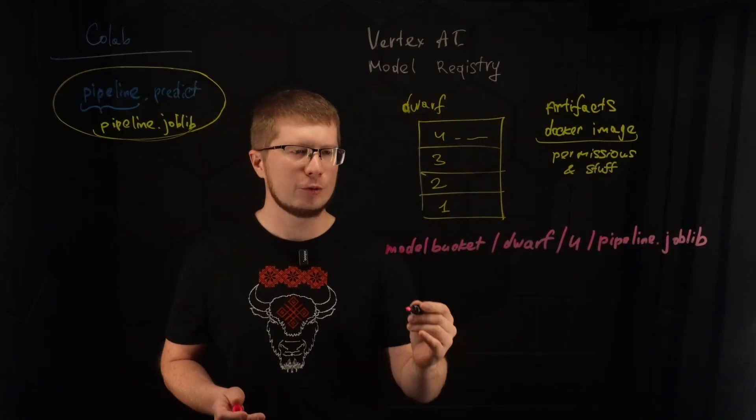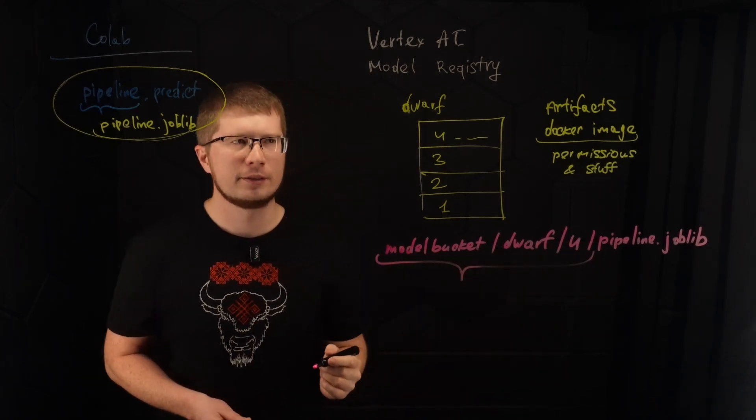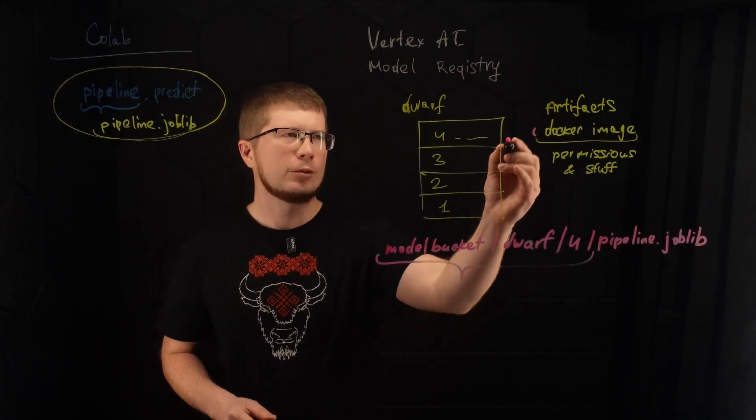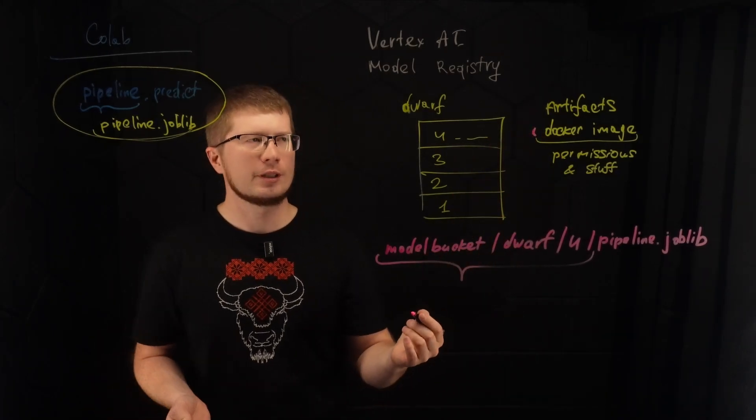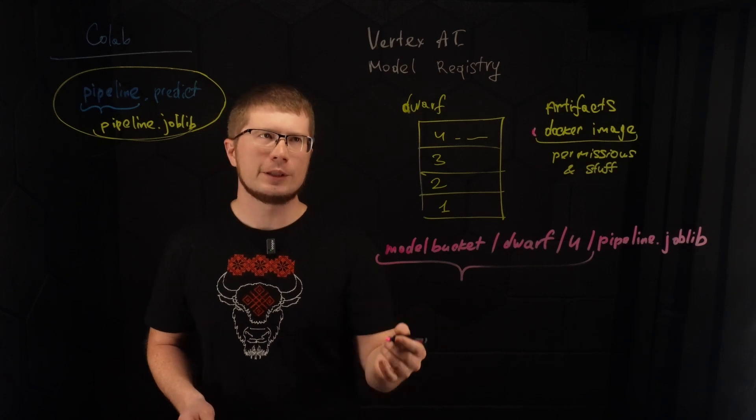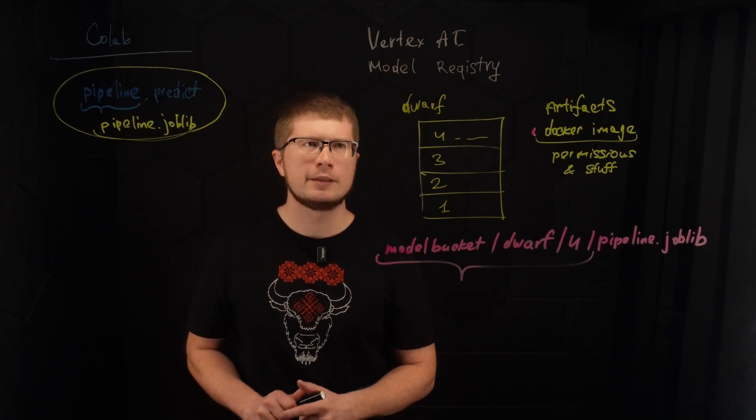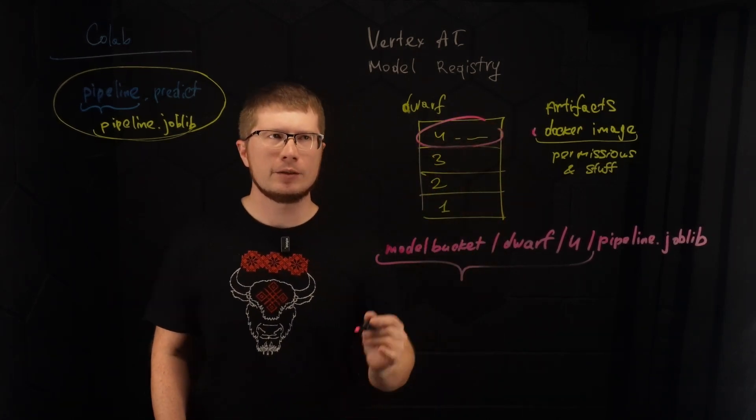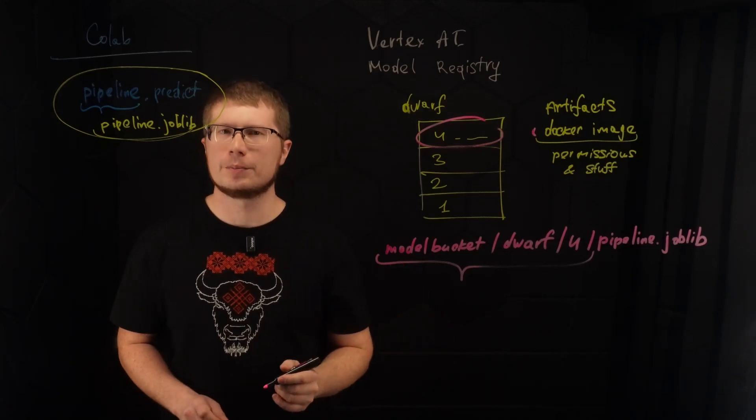So when we create a model version, we pass this path into model version. The other parameter is a Docker image. And we can just use a default one because we don't care about real-time inference. Once the model is created, we can use it in our pipeline. We can download it and do the batch inference in our prediction step.